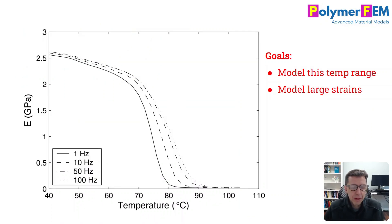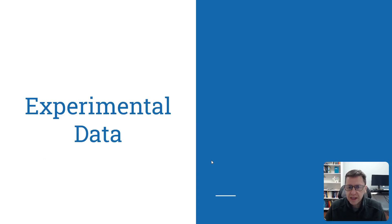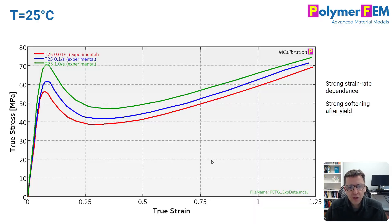Here's some data that just shows how much the modulus changes for this material. I'm interested in room temperature up to about 100 degrees C in this case. You can see from this data that the modulus just drops like crazy. How can we model this response? The goal here is not only to model the modulus versus temperature, I want to predict a large strain response too. Let's start by talking about the experimental data first.